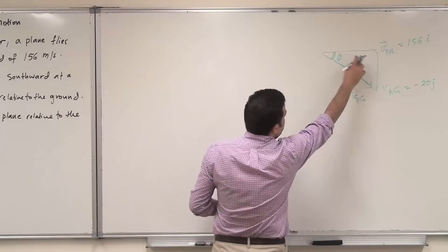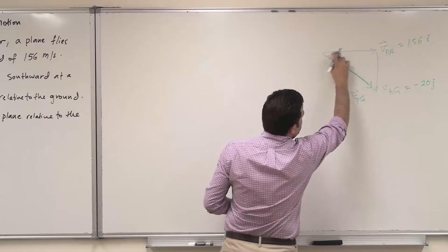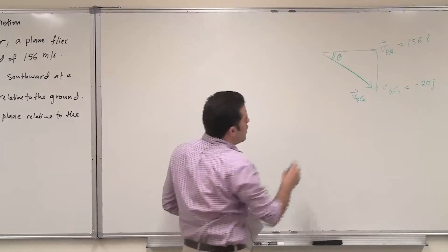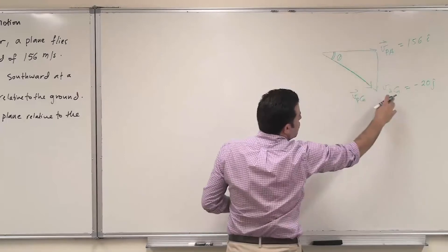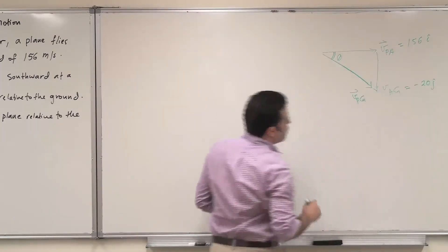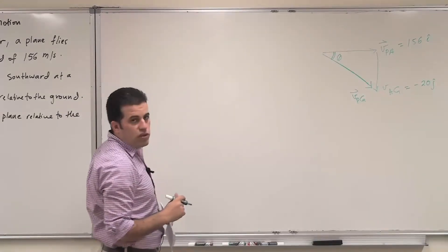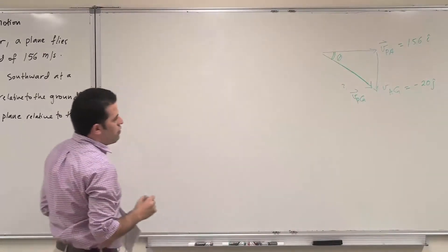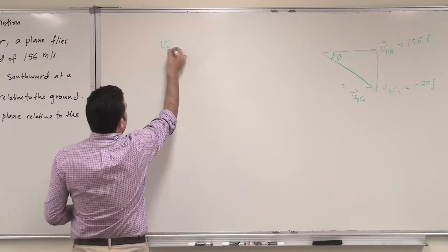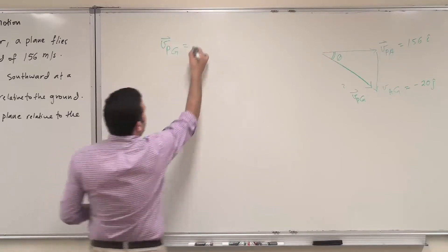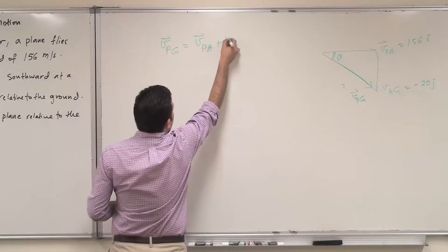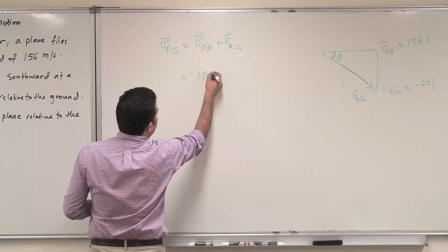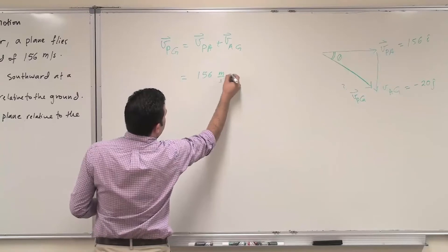According to the question, the plane moves relative to the air eastward — along the positive i-hat direction — at 156 meters per second. The air moves relative to the ground southward at minus 20 j-hat meters per second. The velocity of the plane relative to the ground equals the velocity of the plane relative to the air plus the velocity of the air relative to the ground: 156 i-hat plus minus 20 j-hat meters per second.